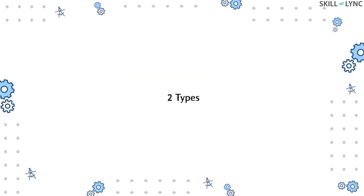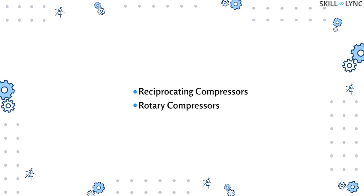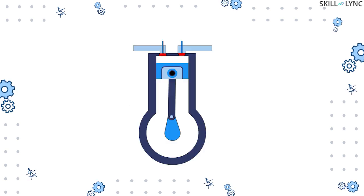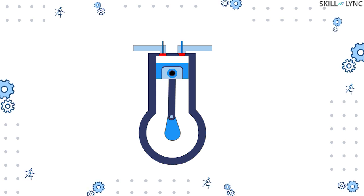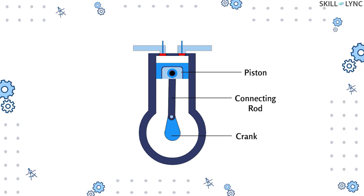Positive displacement compressors can be further classified into two types: reciprocating compressors and rotary compressors. Today we will exclusively discuss the reciprocating air compressors. A reciprocating air compressor consists of a piston that reciprocates inside the cylinder for compressing the air. The compressor looks similar to a conventional internal combustion engine.